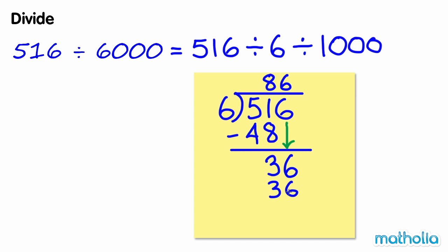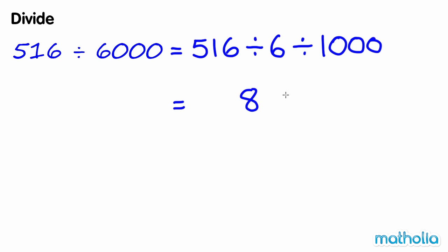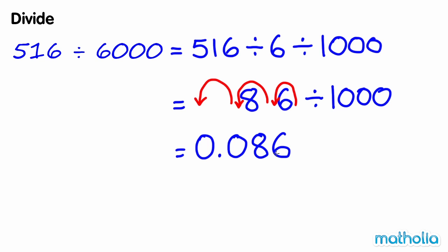516 divide 6 equals 86. Divide this by 1000 by shifting the decimal point three places to the left. So 516 divide 6000 equals 0.086.